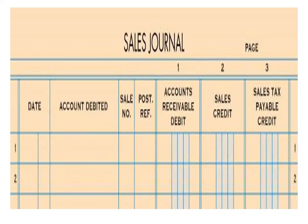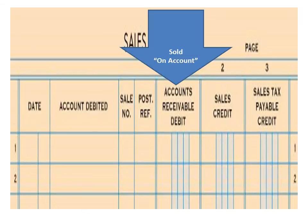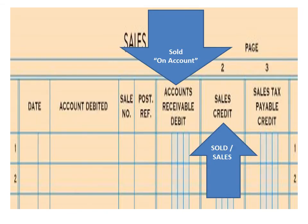The Sales Journal has three special amount columns. The first is Accounts Receivable Debit, meaning we're selling on account. The second is Sales Credit, for recording the sale. The third is Sales Tax Payable. We only use the Sales Journal when we sell stuff on account. If we receive cash for sales, that goes in the Cash Receipts Journal.